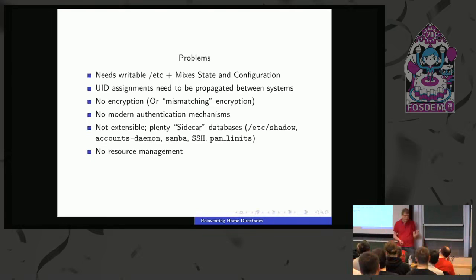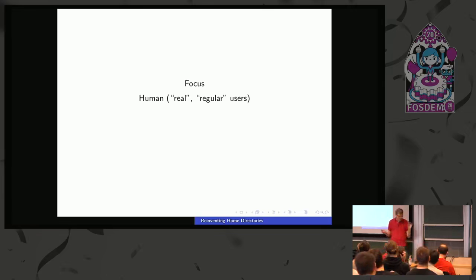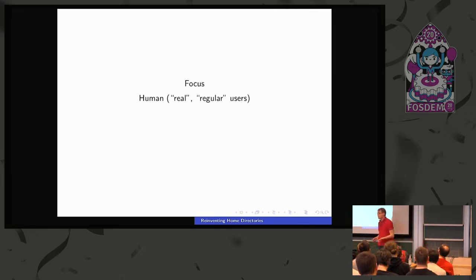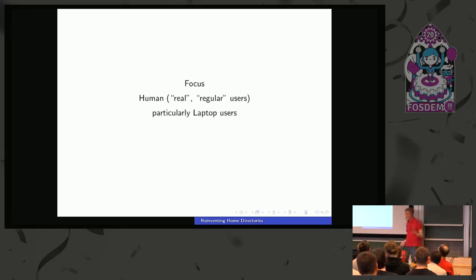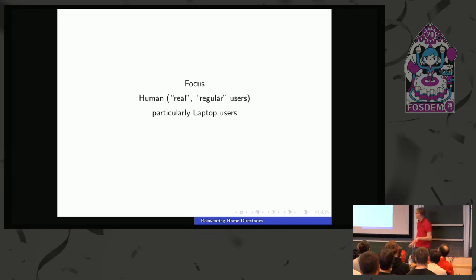The focus for homeD is human users — in contrast to system users like the user your Apache daemon runs under. I only care about human users, specifically laptop users. On a laptop you usually have one user, maybe two, but you're unlikely to have 1,000 users. The amount of users you have on your laptop is below 10. That's kind of the focus.